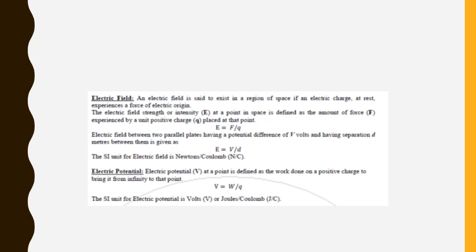Electric potential is defined as the work done on a positive charge to bring it from infinity to that point. If you bring a charge from infinity to a particular point, the energy stored in the form of potential is called electric potential. It is defined as V = W/Q, where W is the work done and Q is the charge. Using joules for work and Coulombs for charge, the SI unit of electric potential is joule per Coulomb.